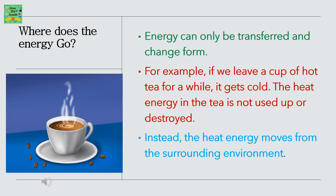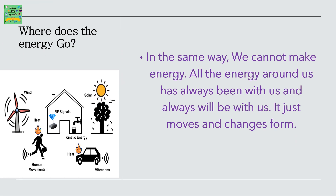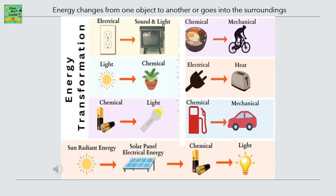Energy can only be transferred and change form. For example, if we leave a cup of hot tea for a while, it gets cold. The heat energy in the tea is not used up or destroyed. Instead, the heat energy moves to the surrounding environment. In the same way, we cannot make energy. All the energy around us has always been with us and always will be. It just moves and changes form. Energy changes from one object to another or goes into the surroundings.